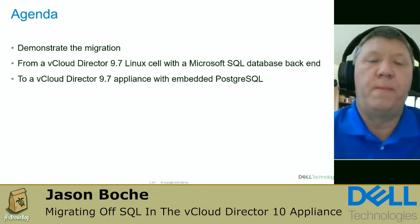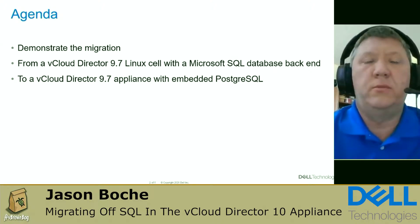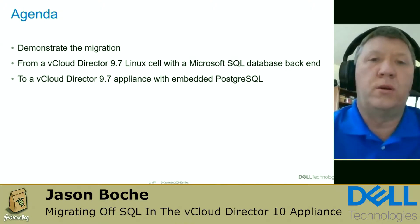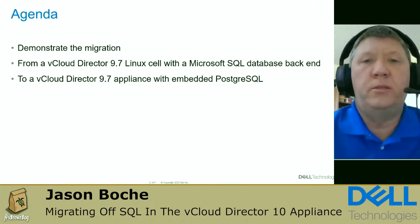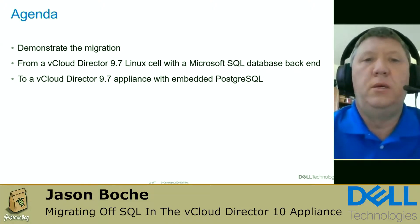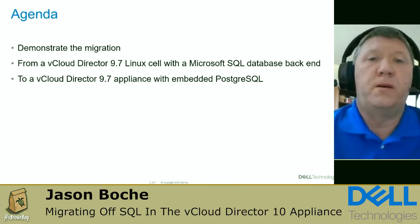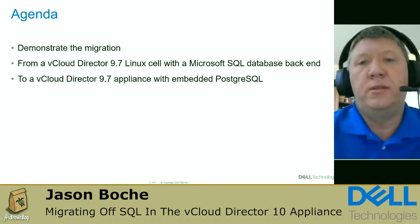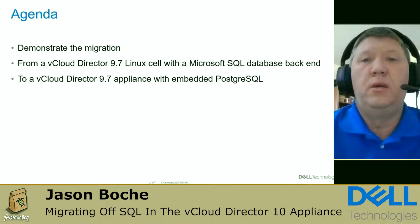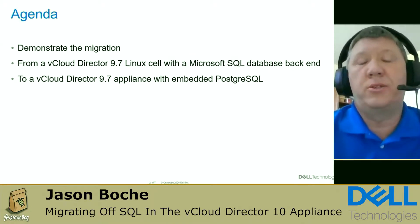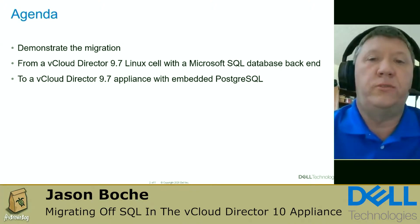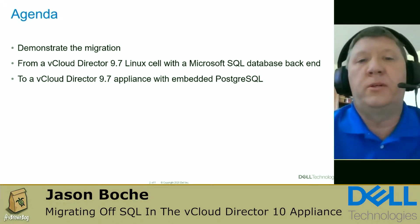A little background on this environment: I built it for our technical marketing group about nine years ago. I deployed it and have been maintaining and upgrading it over the years. Like many VMware products early on, we used a Microsoft SQL Server database backend — it's actually on SQL Server 2016 today. But as of vCloud Director 9.7, support for the external SQL Server backend database goes away. So we need to shift this environment to PostgreSQL with the embedded vCloud Director 9.7 appliance.